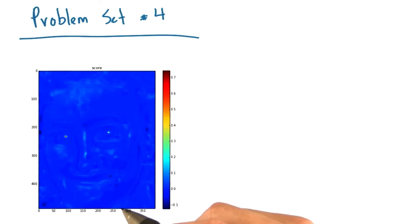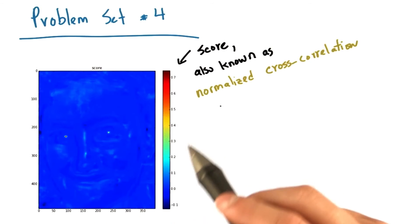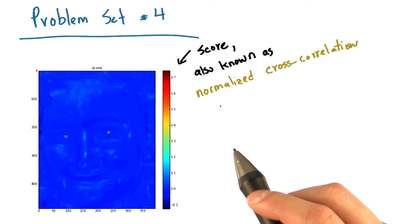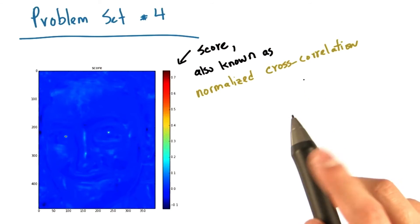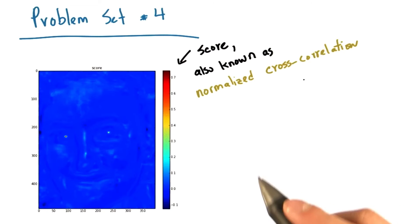We start our red-eye removal algorithm by computing a score for each pixel that estimates the likelihood of that pixel belonging to a red eye. And here's what the score looks like. This score is known as normalized cross-correlation, and it is expressed naturally as a stencil operation. We have computed this normalized cross-correlation score for you. But if you're interested, we will provide extra details about normalized cross-correlation in the instructor comments.